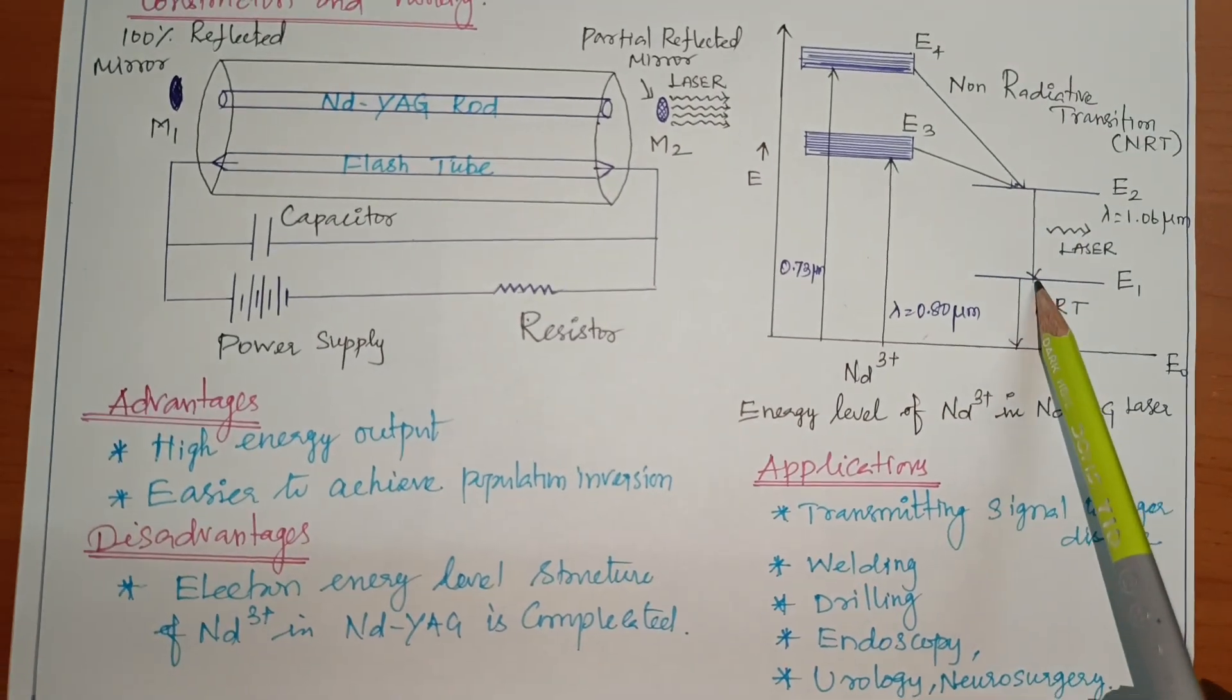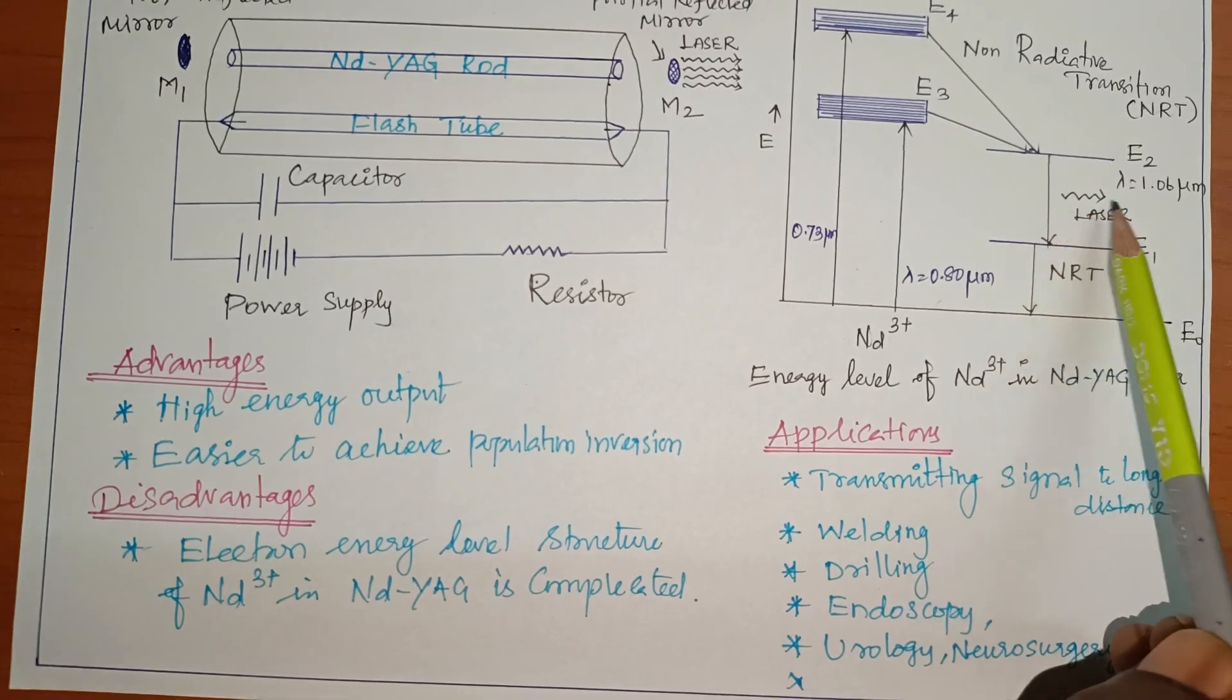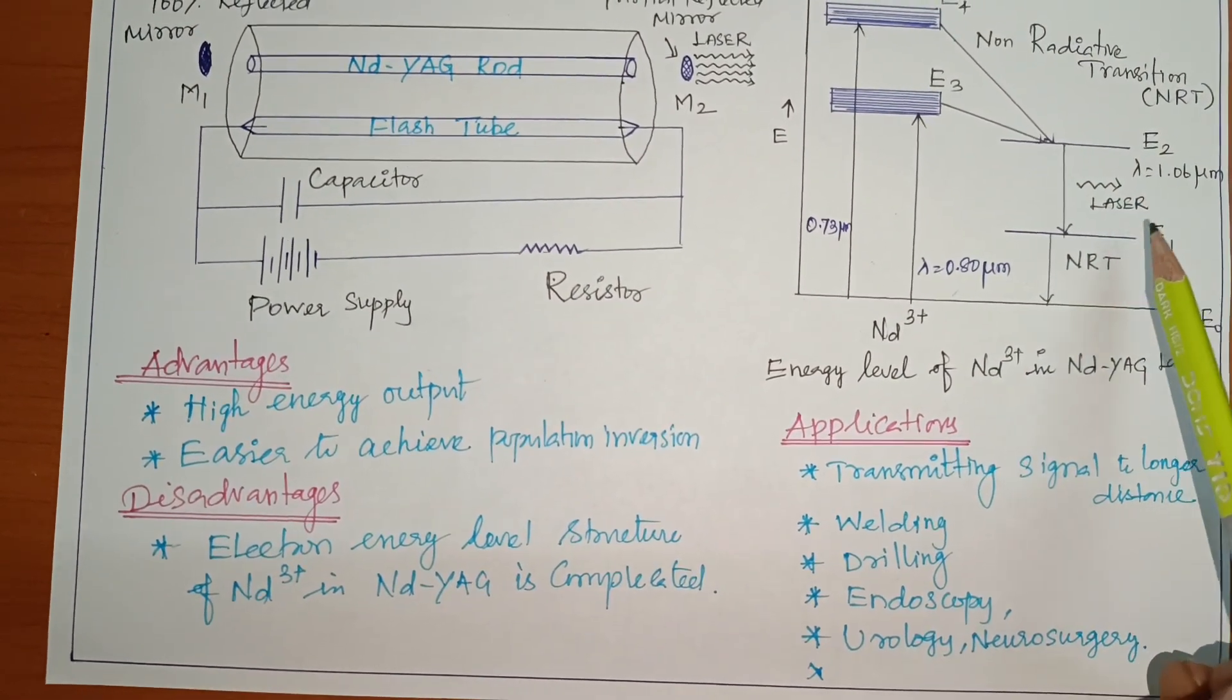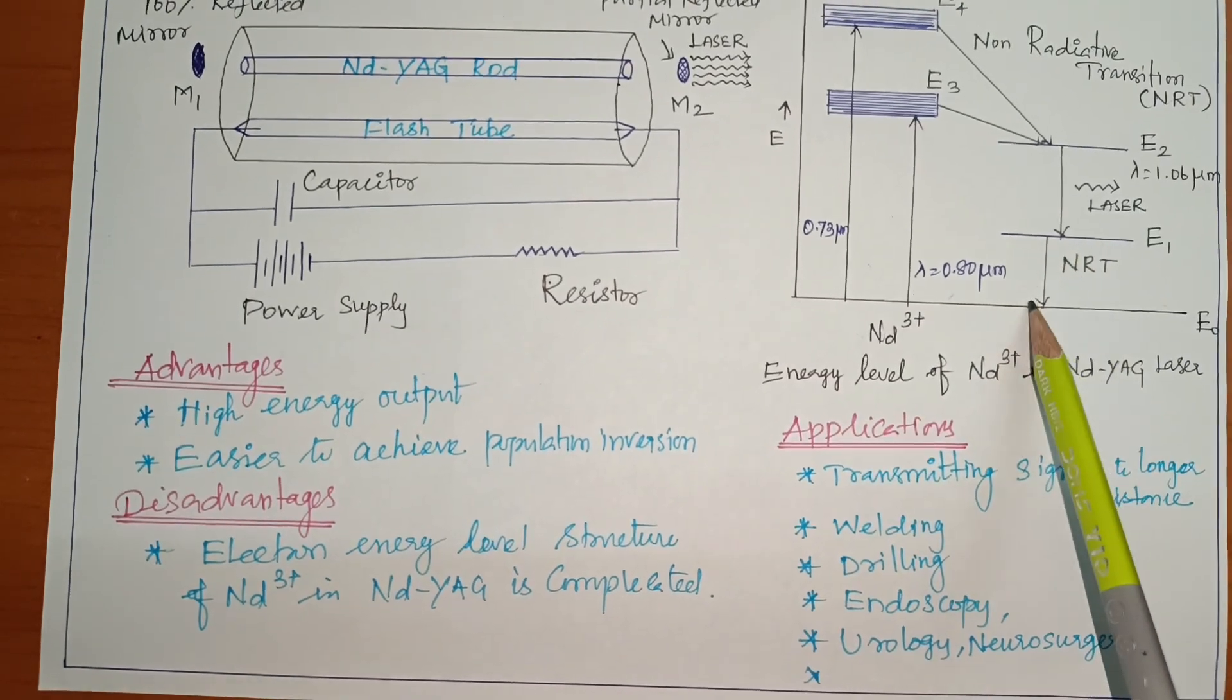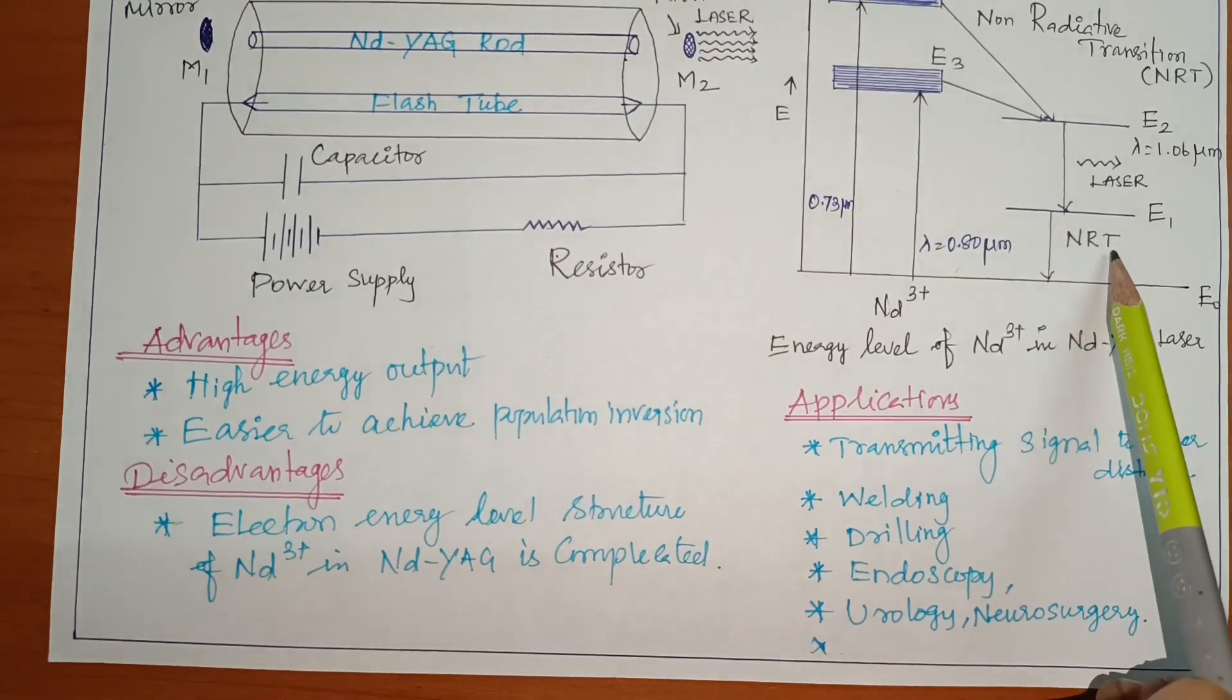E2 and E1 is a transition. So, laser is produced. So, in a transition E2 and E1 is a laser produced. Lambda is equal to 1.06 micrometer energy. Then E1 to E0 this is also non-radiative transition. Non-radiative transition.